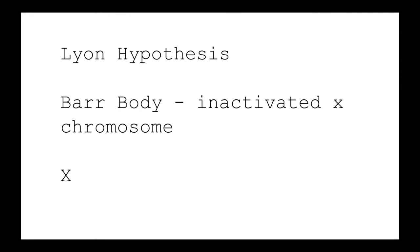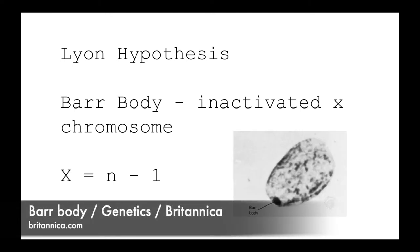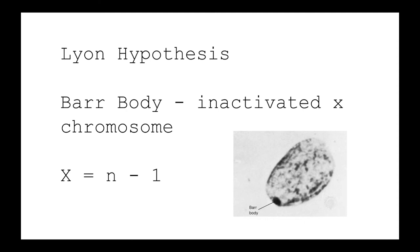The number of Barr bodies that is present can be calculated by one less than the number of X chromosomes. So a female with two X chromosomes will have one Barr body. In a cell, the Barr body is condensed and is pushed to the back of the nucleus.